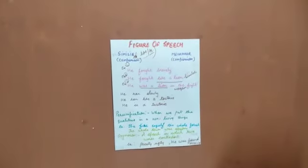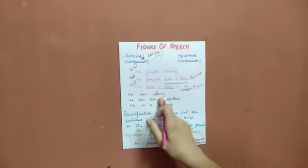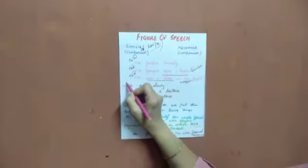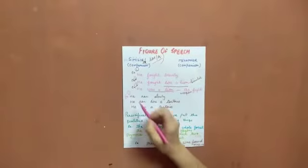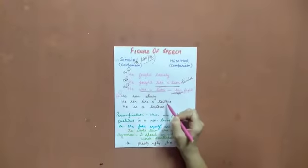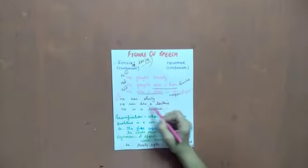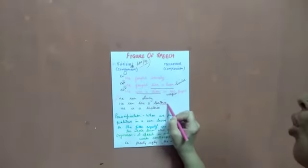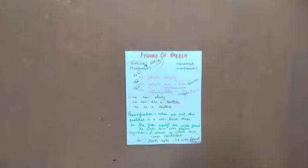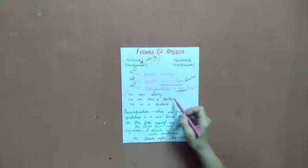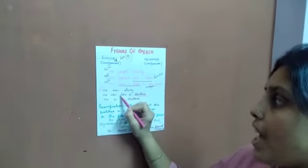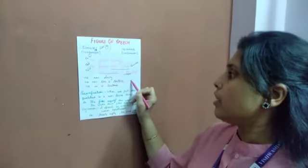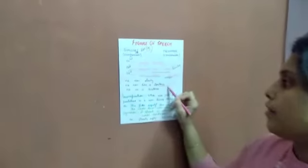I hope it is clear. Second example. He ran slowly. It's a very simple sentence. He ran like a tortoise. I'm comparing a person with a tortoise. We all know tortoise. We are comparing a person to a tortoise. Like is there, so it will be a simile here again. He is a tortoise in the race.